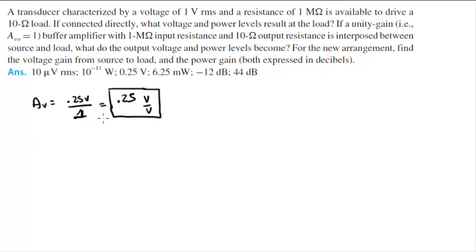If you wanted to calculate this in decibels, the gain in decibels, AV in dB, is equal to 20 log of the absolute value of AV, which comes out to be negative 12 decibels,